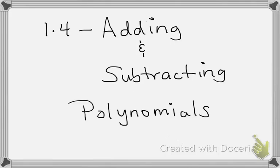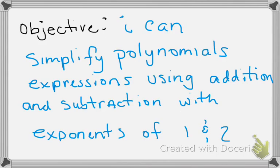This is lesson 1.4, adding and subtracting polynomials. Our learning objective is: I can simplify polynomial expressions using addition and subtraction with exponents of 1 and 2. That means you will have a power of 1 on a variable or a square on a variable.